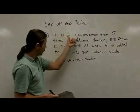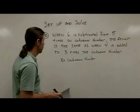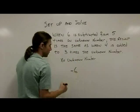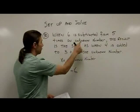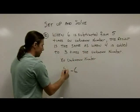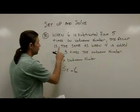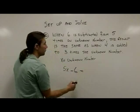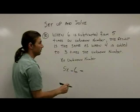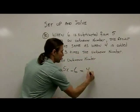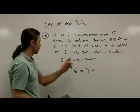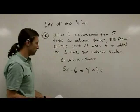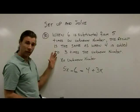Going through each phrase: 'when 6 is subtracted from 5 times an unknown number' becomes 5x minus 6. 'The result is the same as' means equals. 'When 4 is added to 3 times the unknown number' becomes 3x plus 4. So the equation is 5x minus 6 equals 3x plus 4.